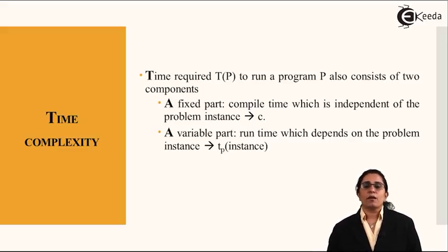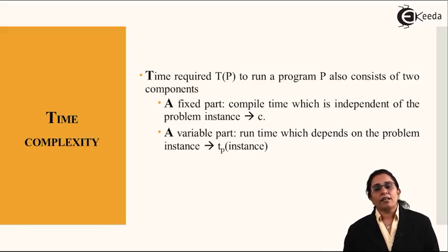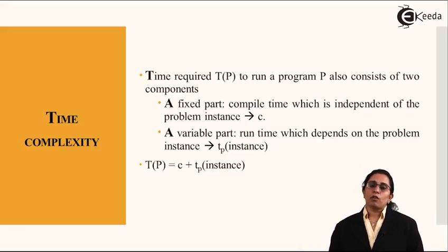The second one is the variable part, that is the run time which depends on the problem instance, that is T(P). So the time complexity T(P) equals the constant part plus the variable part.